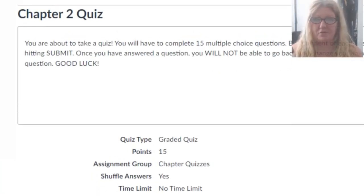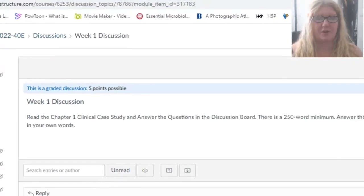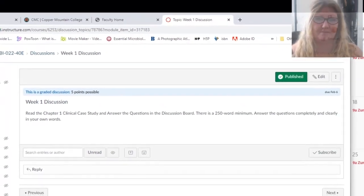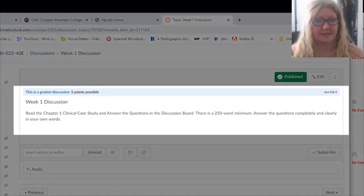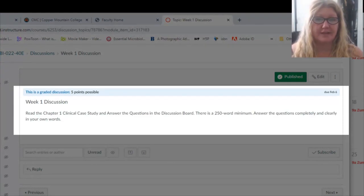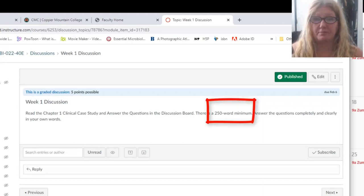Clicking on next, we get to the week 1 discussion question. Each week we'll have a discussion question. Using your text, you are to read the chapter 1 clinical case study and answer the questions in the discussion board. There is a 250 word minimum, so be sure to answer the questions completely and clearly using your own words in order to get full credit.